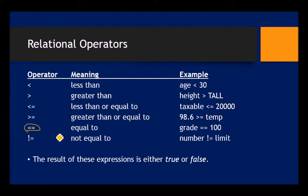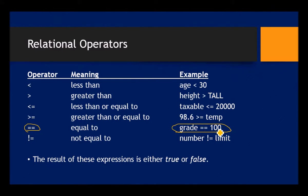One equal sign means take the item on the right and store it into the variable on the left. Two equal signs does a test — it doesn't do any assignment, it just says are these two things equal? For example, does the variable grade contain 100? Not equal to is exclamation point equal sign — are these not equal, do they contain different values?